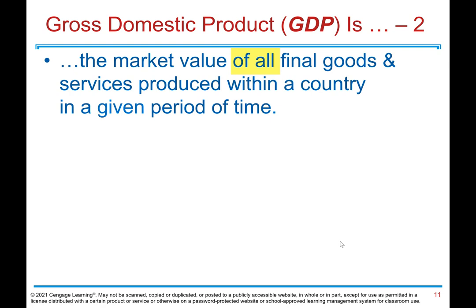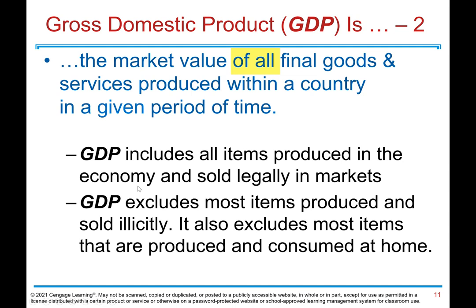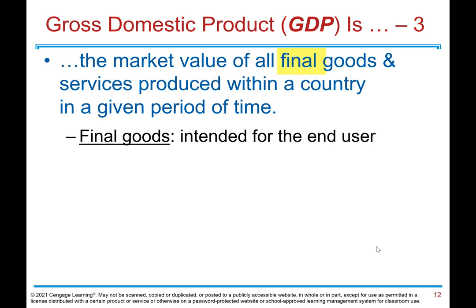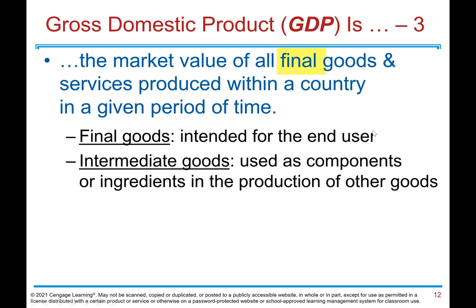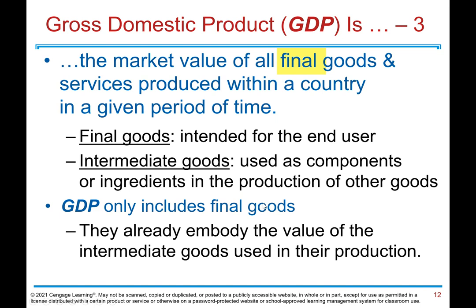The word 'all' in the definition means GDP includes all items produced in the economy and sold legally in markets. GDP excludes most items produced and sold illicitly, and most items produced and consumed at home. The word 'final' means final goods — goods intended for the end user. We exclude intermediate goods, which are goods used as components or ingredients in the production of other goods. GDP only includes final goods, as they already embody the value of the intermediate goods used in their production.